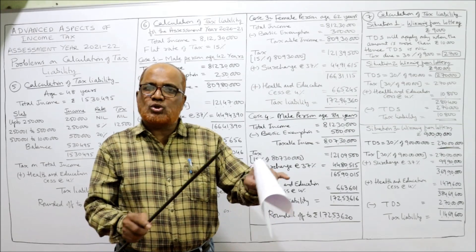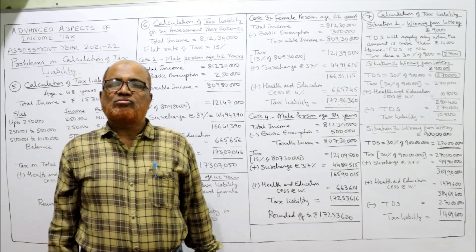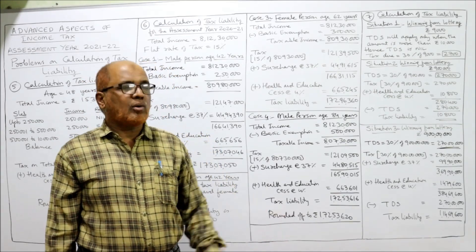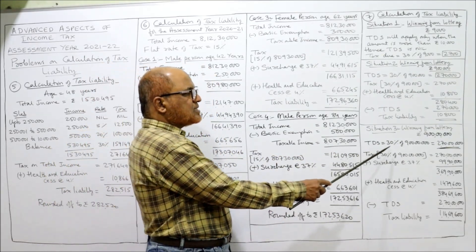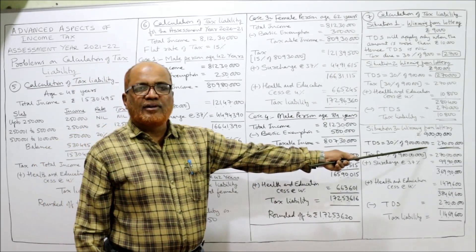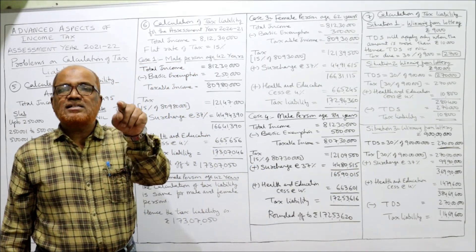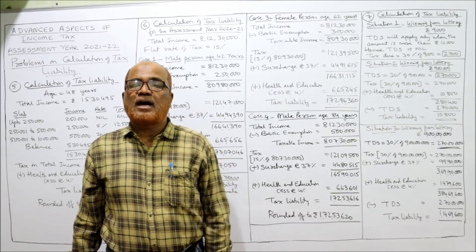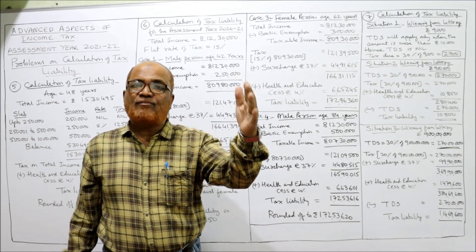Situation 3: winning from lottery is nine crore rupees. First calculate TDS at thirty percent: thirty percent of nine crore is two crore seventy lakh — that is the TDS. Now compute tax liability: thirty percent of nine crore is two crore seventy lakh. Add surcharge — income is more than five crore, so surcharge rate is thirty-seven percent.